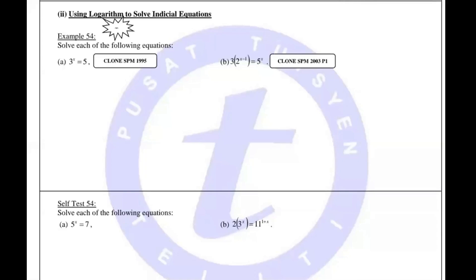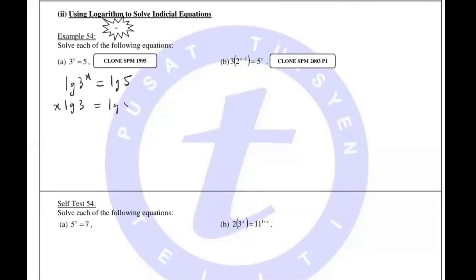This is a common exam question. In indices, you change like 3^x to 3^2, compare, and solve. But here if you have 3^x = 5, you can't write 5 as a power of 3 directly. This is where you introduce logarithm on both sides: put log on the left and log on the right, then bring the power x down. Use your calculator: lg5 divided by lg3 gives approximately 1.465. Always give your answer correct to 4 significant figures.